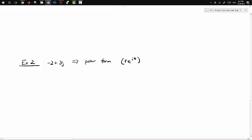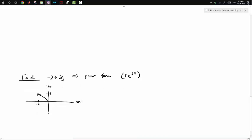First, as in the previous example, I would plot it to get a sense of where this lies. If this is my real axis and this is my imaginary axis, -2 + 3j puts us here roughly in the second quadrant. We can use similar relationships: X = R cos(theta), Y = R sin(theta), and theta = tan⁻¹(Y/X).